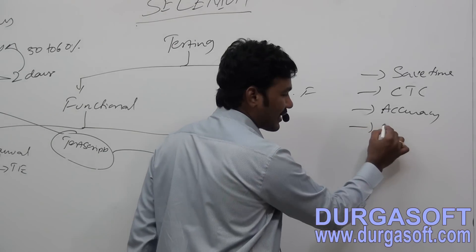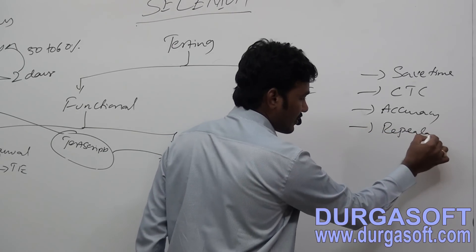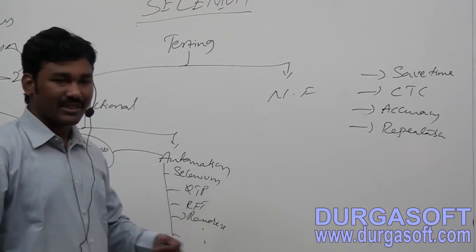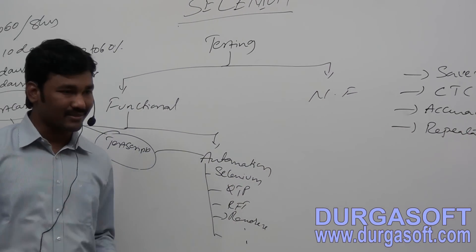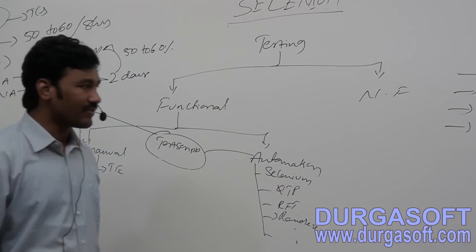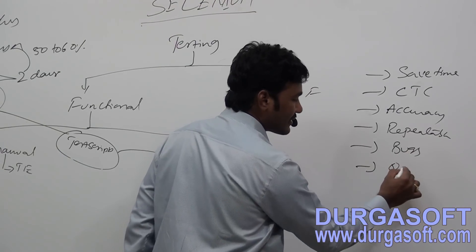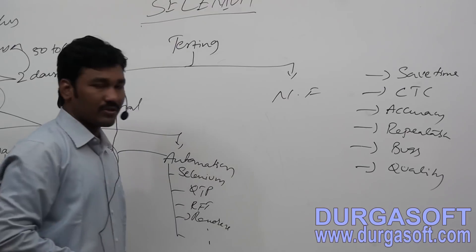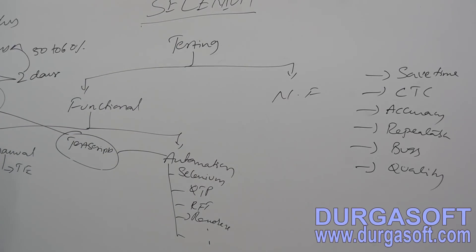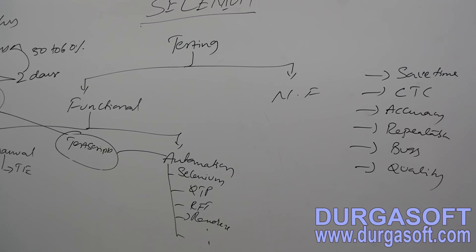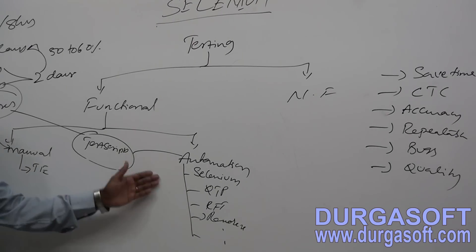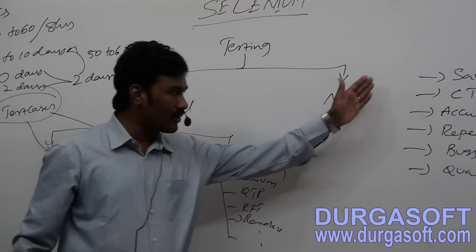The scripts are repeatable — the same scripts can be executed on multiple builds and iterative builds. So we can identify bugs. The end result is quality. The main advantages of automation are: we can save time, reduce cost to the company, maintain accuracy, the scripts are repeatable, we can identify bugs, and the end result is quality.